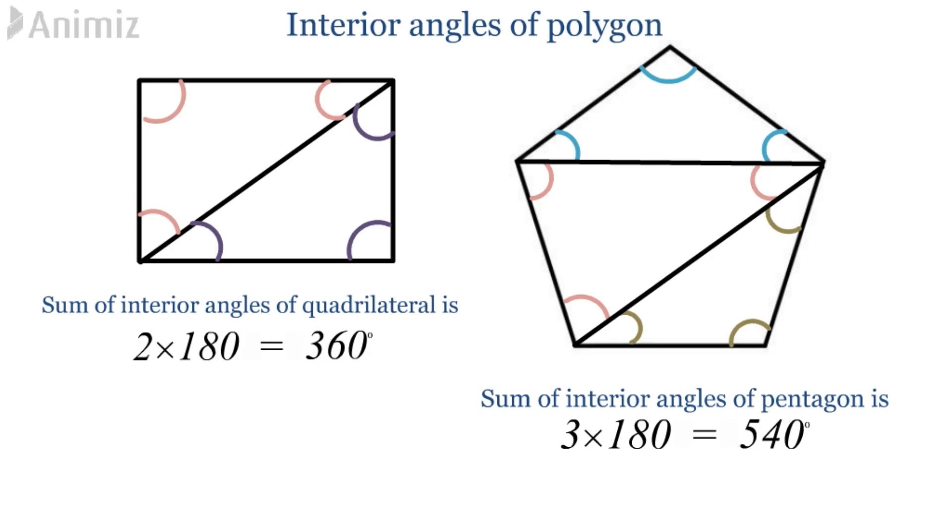If you observe over here, 3 is just 2 less than 5. That is, it is 2 less than the number of sides of a pentagon. And this gives us the formula for sum of interior angles of a polygon.